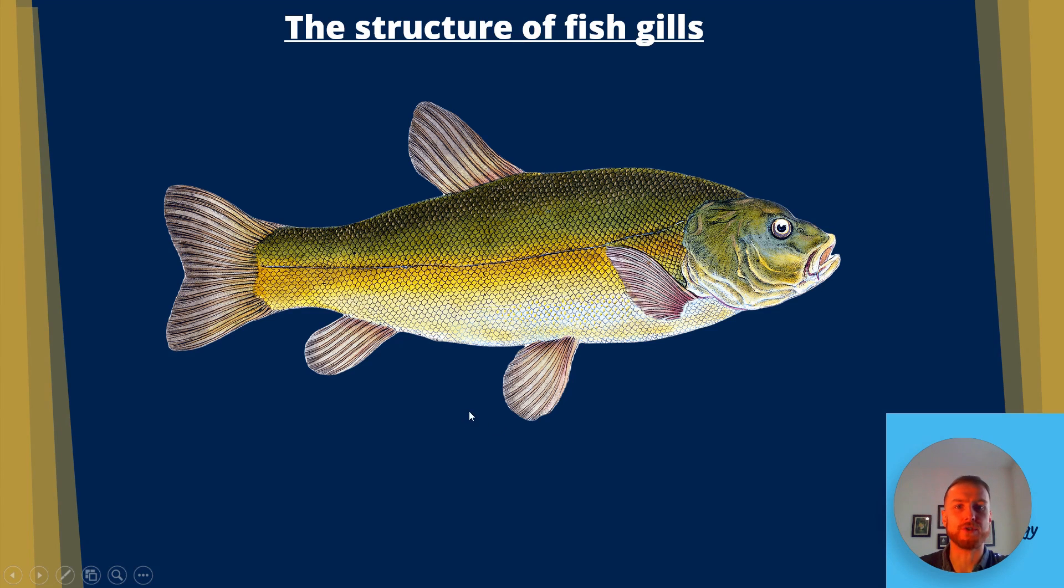Let's go through the structure first of all. We have the gill cover here which is also known as the operculum. Next we have the mouth, aka the buccal cavity. You'll see fish opening and closing their mouths and when they open their mouth they'll reduce the pressure within the buccal cavity drawing water in.